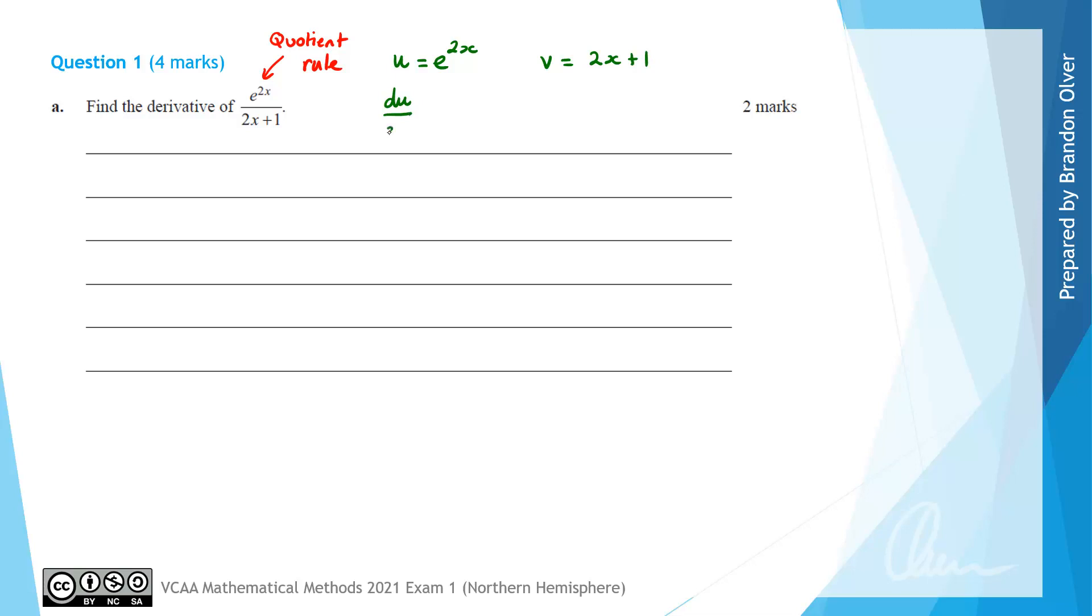We then need to calculate du/dx, so the derivative of e^(2x), which becomes 2e^(2x). And we need to find dv/dx, which is the derivative of (2x + 1), which is simply 2.